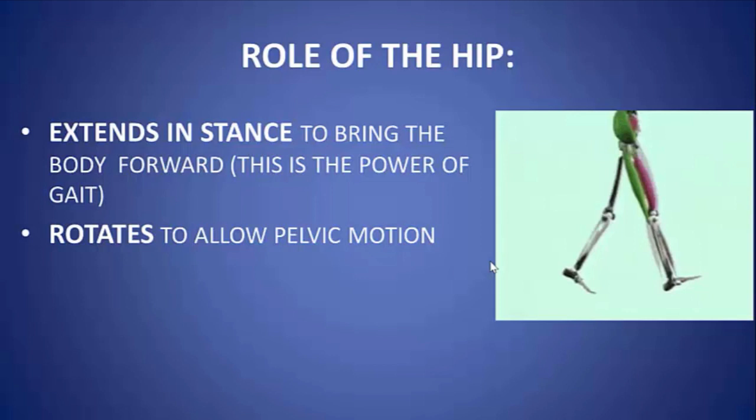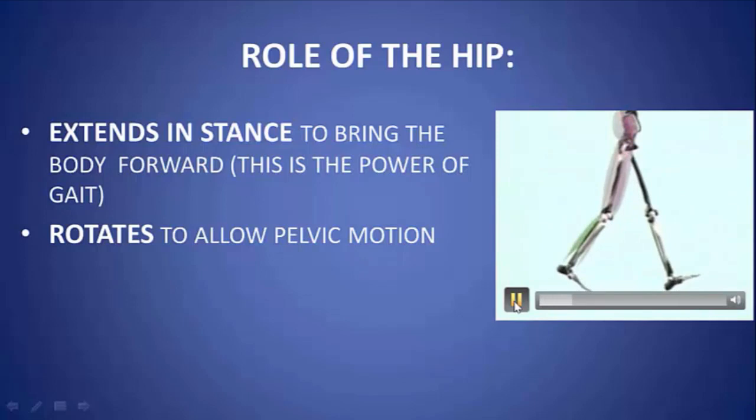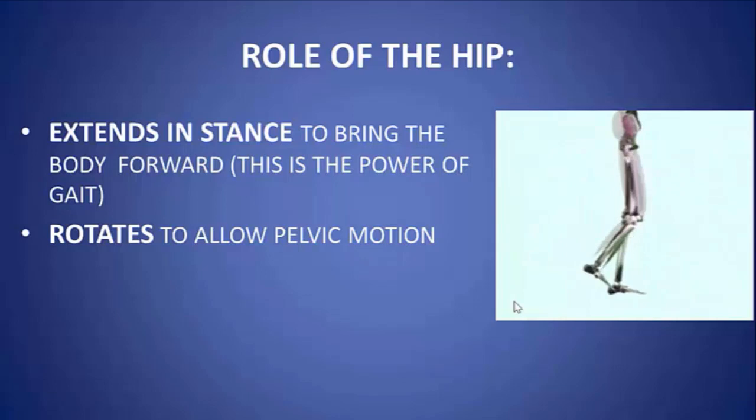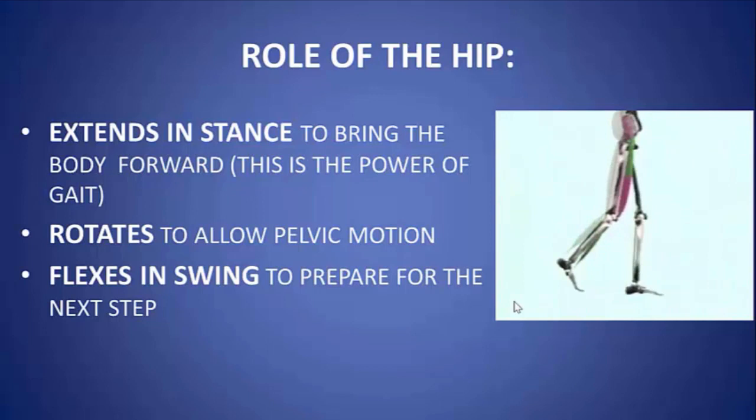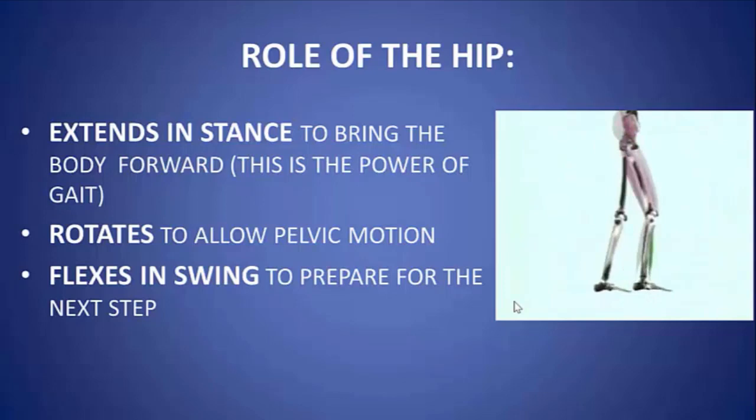In addition, the pelvis can rotate on the hip. At the beginning of stance phase, the contralateral pelvis is somewhat posterior, and as we progress through stance phase it becomes more anterior. This allows for a smoother gait pattern and less side-to-side motion of the upper trunk. At the end of stance, as the hip lifts the leg off the ground, the leg flexes during swing phase to prepare it to accept weight for the next step.